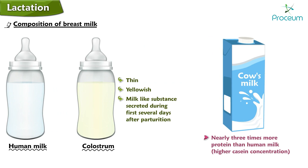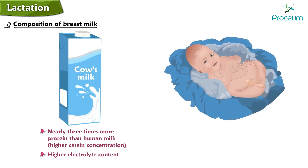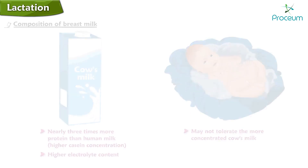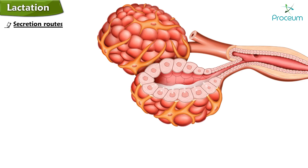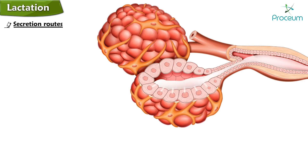Cow's milk has nearly three times more protein than human milk, almost exclusively a result of its much higher casein concentration. Cow's milk also has a higher electrolyte content. The difference in composition between human and cow's milk is important because a newborn with its delicate gastrointestinal tract may not tolerate the more concentrated cow's milk. Secretion of the complex mixture of milk constituents is carried out by five major routes.